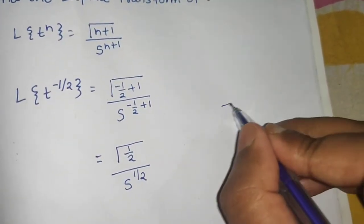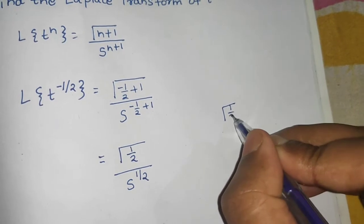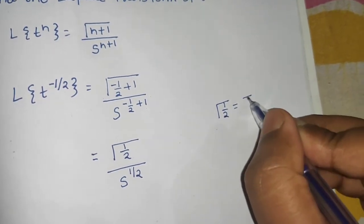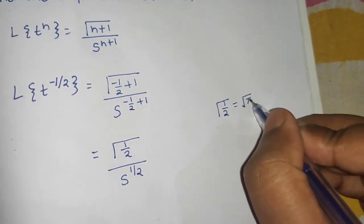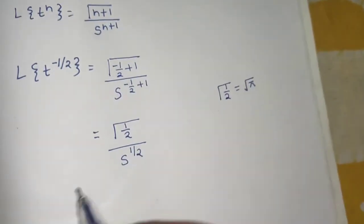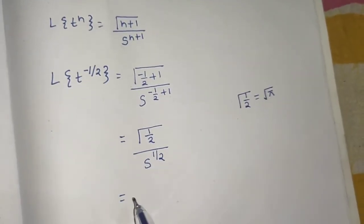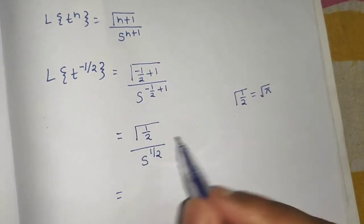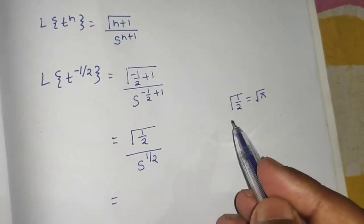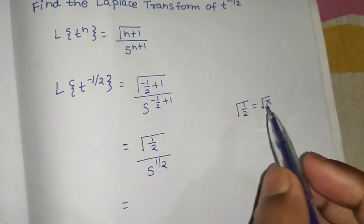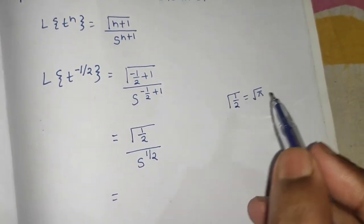Now we know the formula of gamma half that is root pi. This you have to remember. We can also derive that separately, but for the time being, gamma half is root pi.